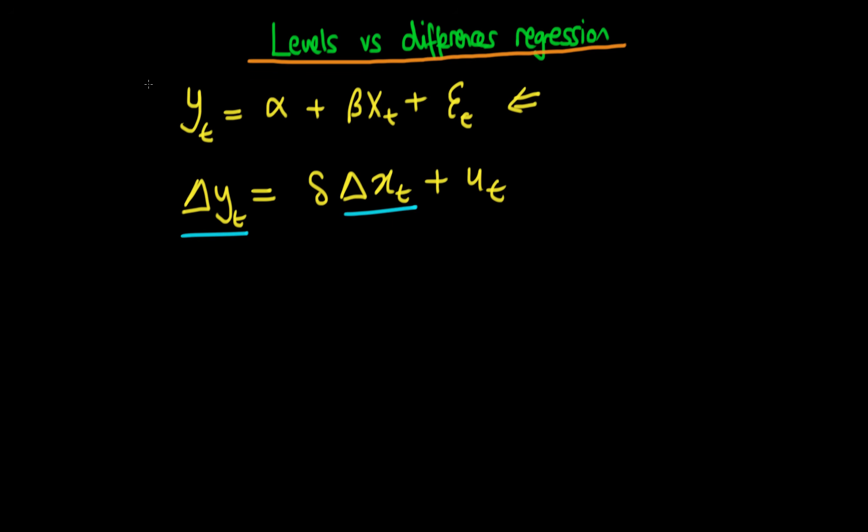Part of the problem and part of the reason I'm doing this video is because these two types of regression are typically thought of by a student of econometrics as one and the same thing, and that same student thinks that the estimate of beta will be the same as the estimate of delta.